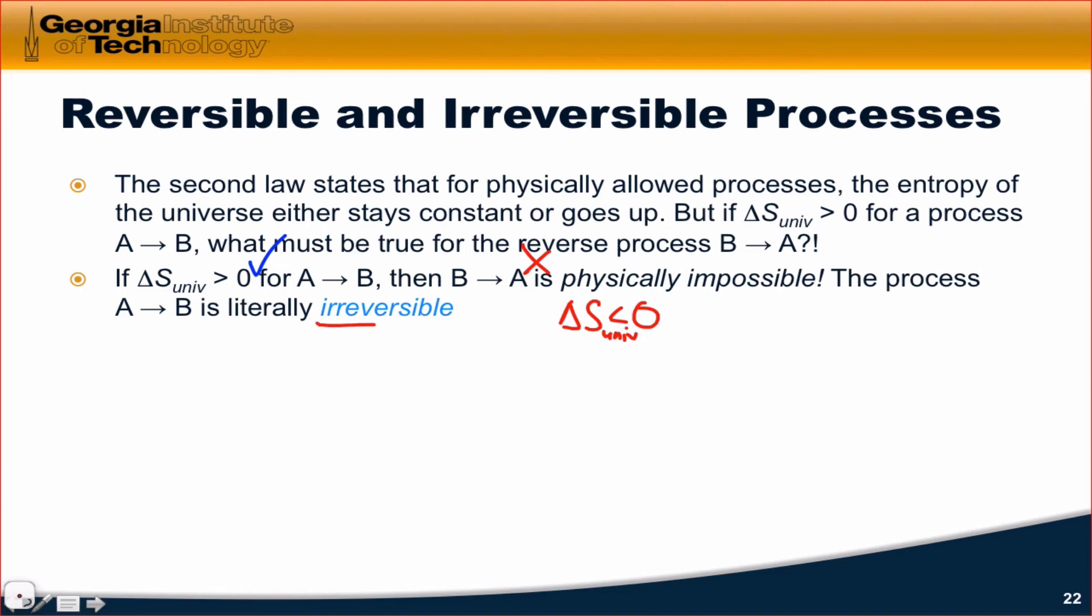That's where the terminology irreversible comes from. It is not possible to run the process B to A leaving the universe in the exact same state it was in before the forward process, A to B.